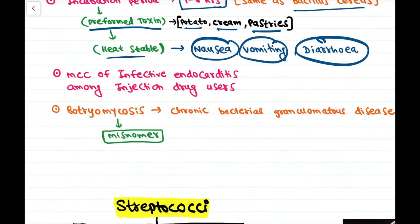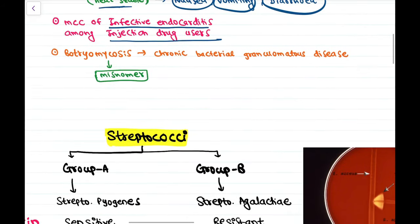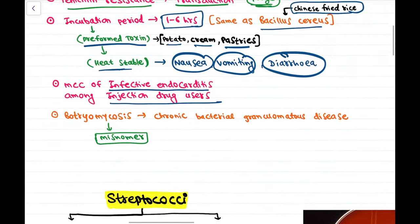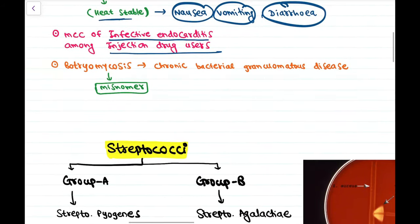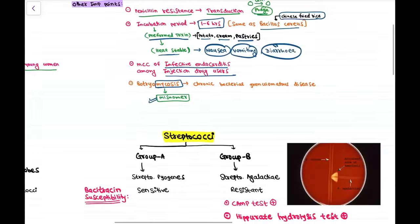Staphylococcus aureus is the most common cause of infective endocarditis in injection drug users. Chronic bacterial granulomatous disease known as Botryomycosis is caused by Staphylococcus — it is a misnomer as it sounds fungal but is actually caused by a bacterium.